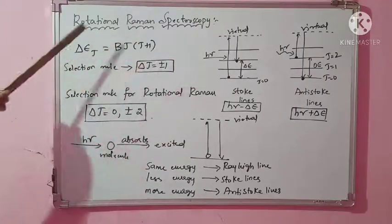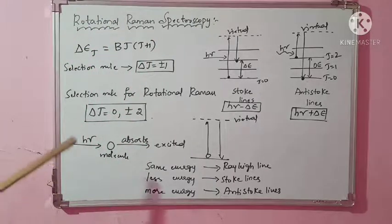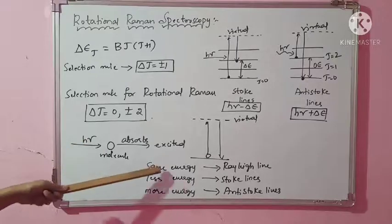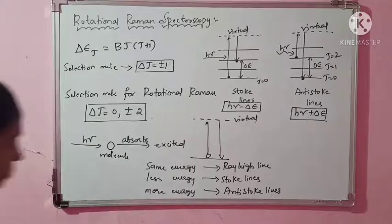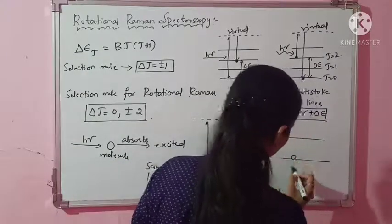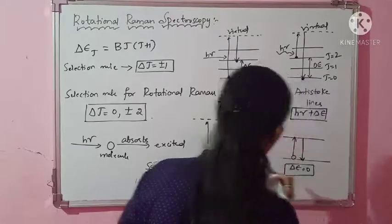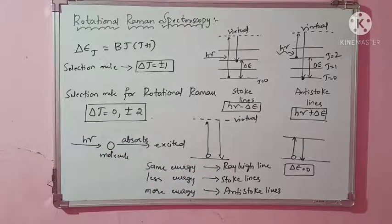So, rotational Raman spectroscopy involves molecular rotation alongside Raman scattering, with selection rule ΔJ = 0, ±2. When ΔJ = 0, the energy of emitted radiation equals that of incident radiation — this gives the Rayleigh line. When ΔJ = ±2, you observe Stokes lines (less energy) or Anti-Stokes lines (more energy). This completes the introduction to Raman spectra.